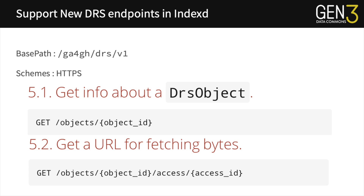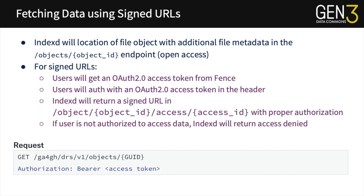With the introduction of the DRS standard within GA4GH, we've implemented the two DRS APIs to IndexD. There is a GET objects endpoint with the object ID — which in this case is the GUID — and the access endpoint for getting a signed URL. The preferred method of accessing byte data within Gen3's implementation of framework services is through signed URLs. Signed URLs are short-lived URLs that allow you to download directly from cloud storage. Both Google Cloud and Amazon Web Services support signed URLs.